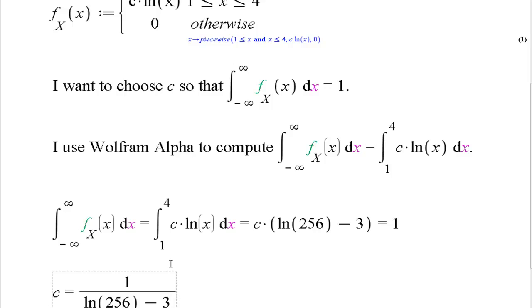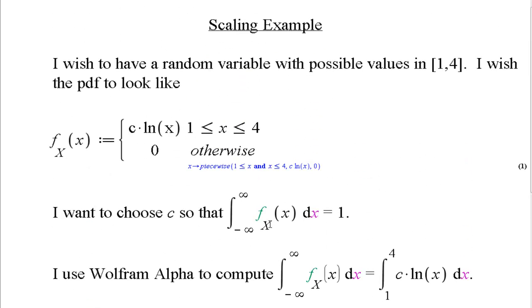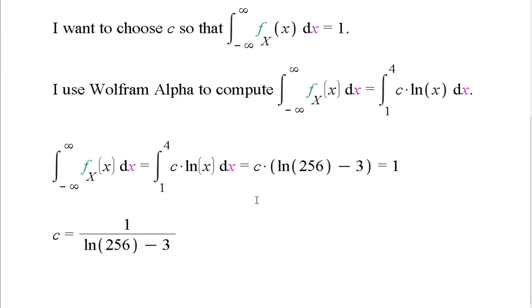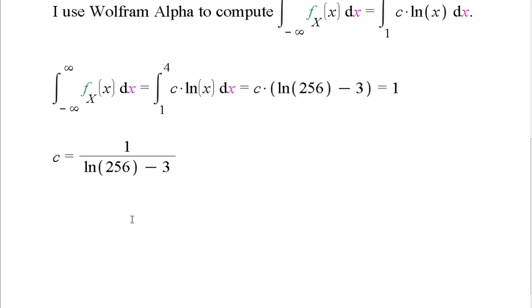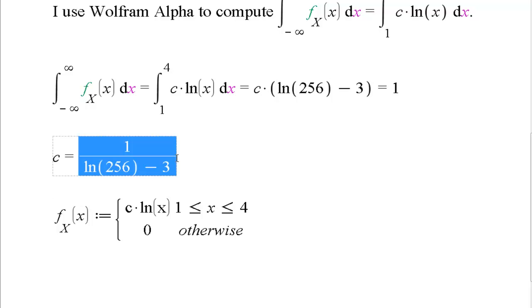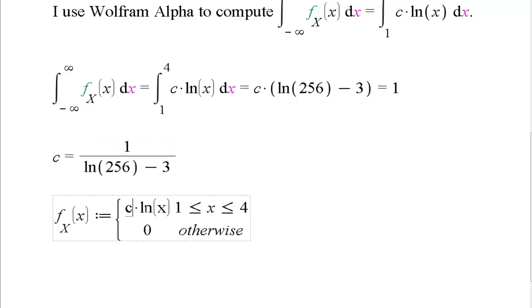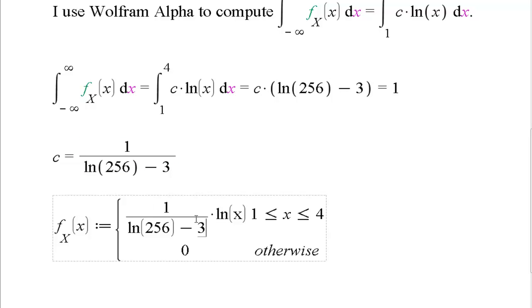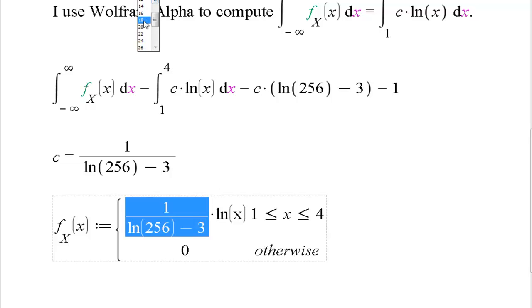To define a PDF of this form, a probability density function that has possible values from 1 to 4 with the formula that looks like this, I just need to plug in this c value to get the formula for the PDF. There's my PDF.